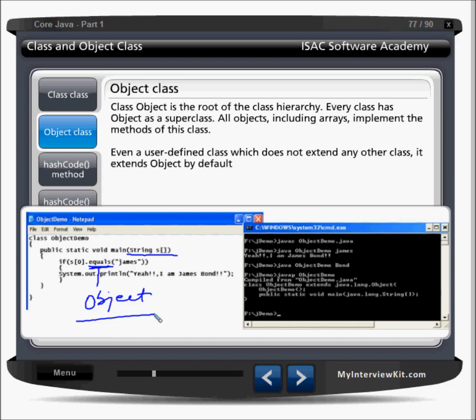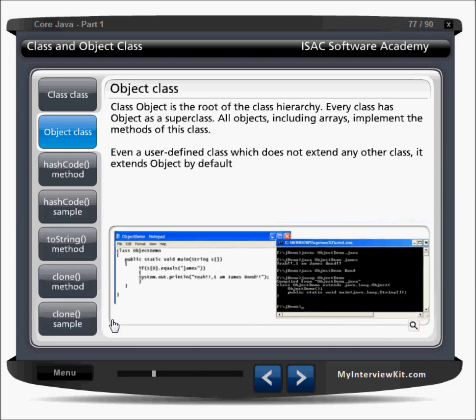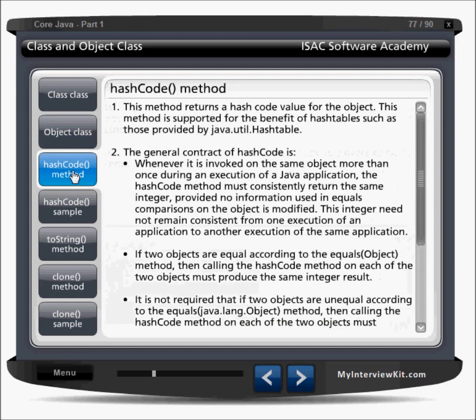If you write 'javap ObjectDemo', this is my class, it is saying there is a class ObjectDemo. It extends Object, so it is a subclass of Object. It is having one default constructor and one public static void main method. Now in the Object class, there are a number of methods like hashCode(), toString(), and clone() methods which are very useful when working with Java programs.